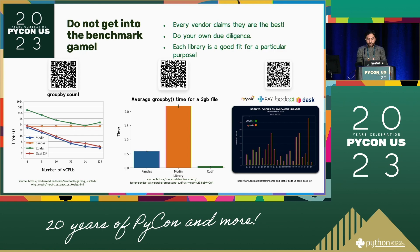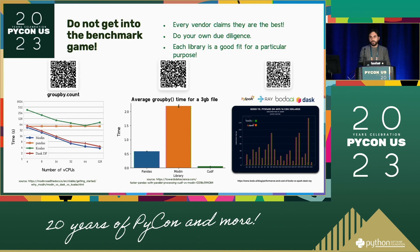For example, while Modin claims to outperform Pandas and Dask, others have shown in independent blog posts that Modin's performance may deteriorate at larger data sizes using only simple filter operations. There's also a blog covering Bodo, Ray, and PySpark on a workflow derived from TPC-H on AWS. Some of these libraries are fit for compute-heavy operations, some for IO-heavy operations. You really need to try them out yourself. Back in 2018, I was using the multiprocessing library and found that for my operation it was even slower than Python itself — it was just because Pandas was on a large node on AWS and I wasn't using all the CPUs.